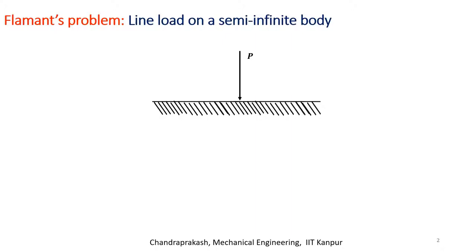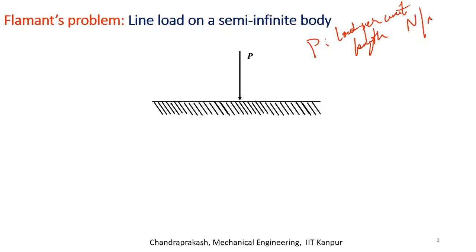We have a line load on a semi-infinite body. On the floor, we have a thick fat rope with some huge mass sitting on it — a long straight rope with a heavy mass resting on the floor. Due to its weight, it is exerting a force, and that force per unit length is what is designated as P. This P is load per unit length. The unit of load is newton, so the unit of P is newton per meter.